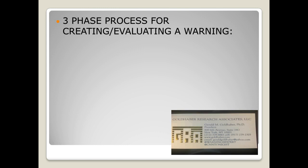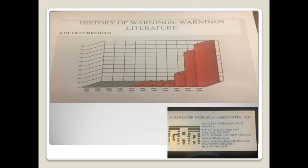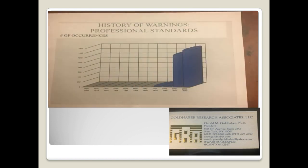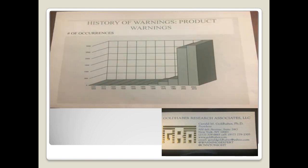There's a whole process involved in creating and evaluating warnings — this isn't just a lawyer calling up and saying 'put on this thing and we'll be okay.' The field of warnings, in terms of published literature, government regulatory mandates, trade association standards, and professional literature, is basically a 20- to 30-year phenomenon. People are just starting to get the message that this is something to take seriously. Professional standards and federal regulations have largely come out in the last few decades.